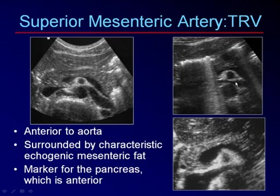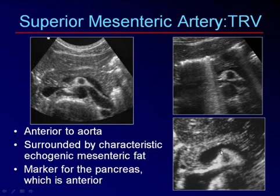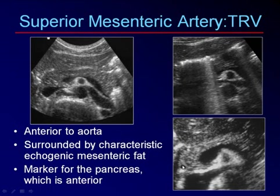The aorta is in the back, the left renal vein crosses in between, the splenic vein is just anterior, and anterior to that is the body of the pancreas. On a transverse scan, the echogenic triangle of fat with a hole in the middle is the SMA. In front of that is the splenic vein, and in front of that is the pancreas.